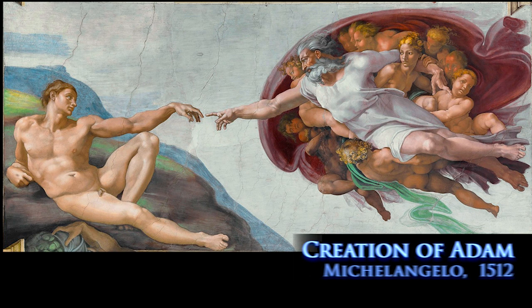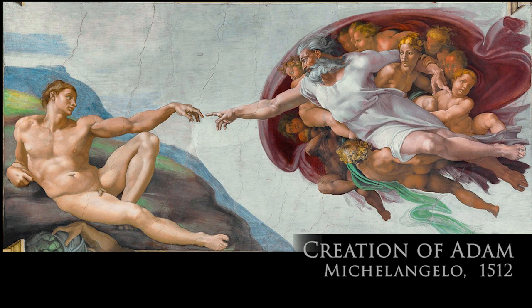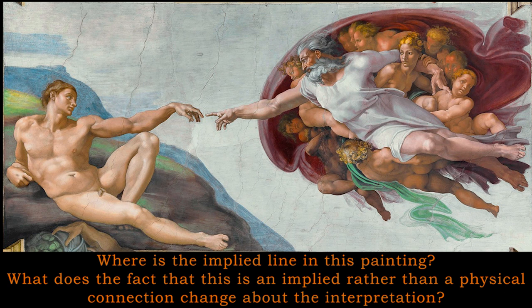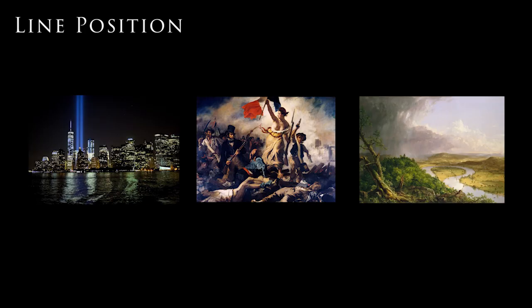Here we have a fresco from the Sistine Chapel ceiling painted by Michelangelo — the very famous scene, the Creation of Adam. In it there is one very prominent implied line. The question is: what is this implied line, and what does the fact that it is implied rather than an actual complete physical connection change about the interpretation of the story and the relationship between these two figures?